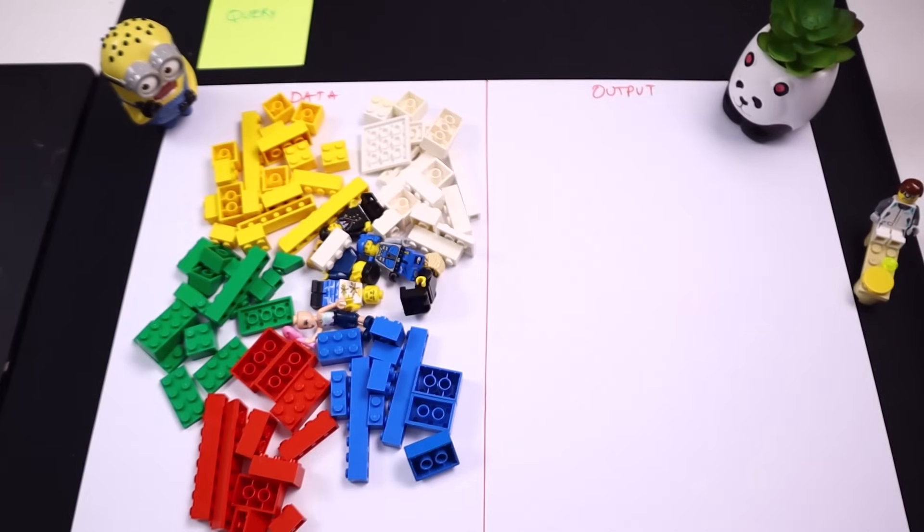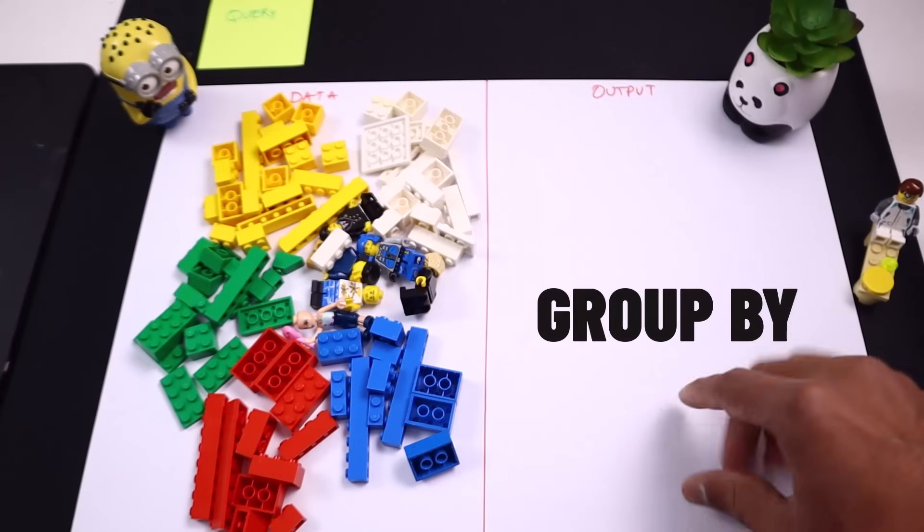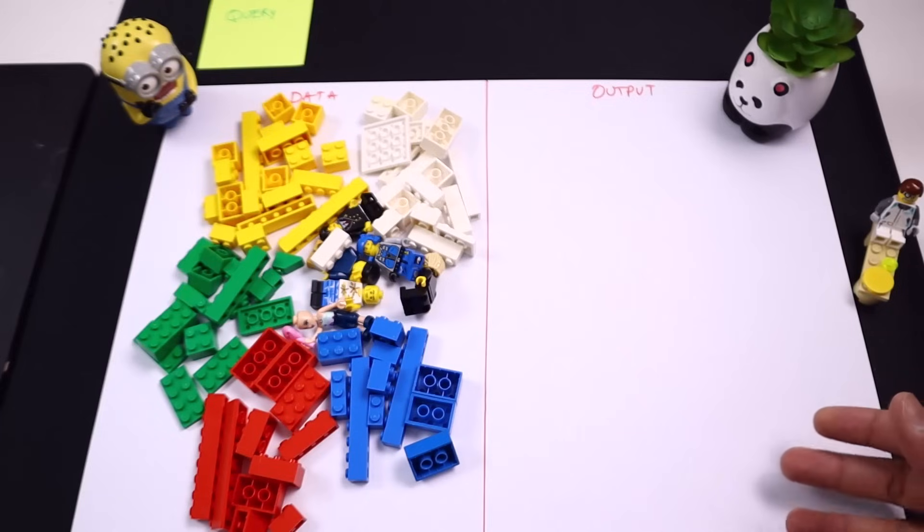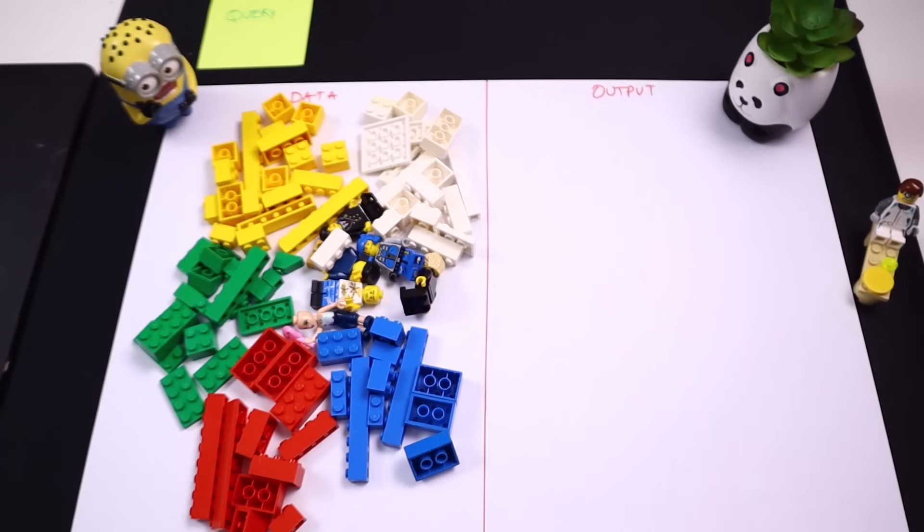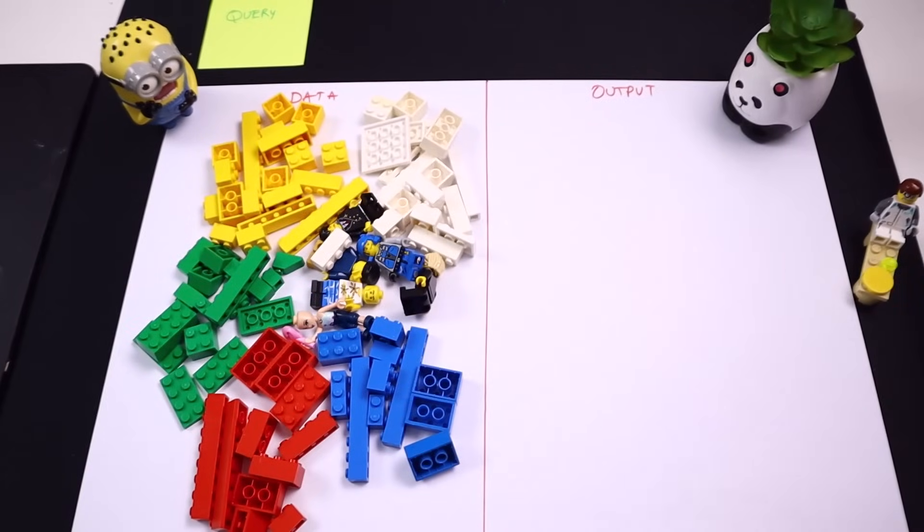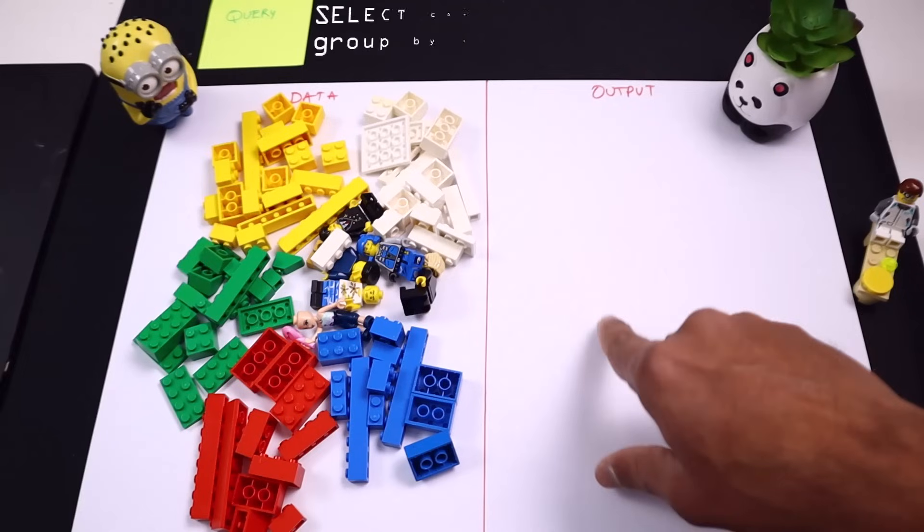Another operator or another clause within SQL is the group by operation. What group by does is they kind of work like Excel pivot tables if you are familiar with those, wherein they take your data, they group the data into chunks based on a specific quality, and then provide you summaries on that.